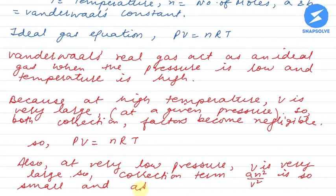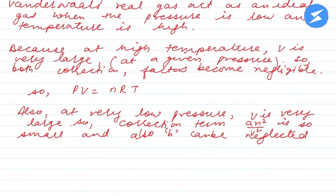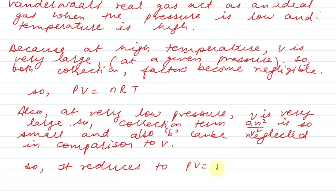And also, b can be neglected because it is minus nb and volume is greater. So it will be neglected in comparison to the volume. So it reduces to PV equals nRT.